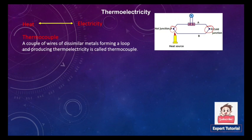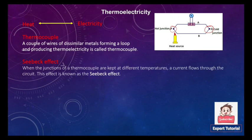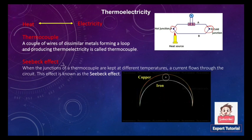Now coming to the first important thermoelectric phenomenon: the Seebeck effect. Thomas Seebeck in 1821 invented this property, known as the Seebeck effect. When the junctions of a thermocouple are kept at different temperatures, a current flows through the circuit. This effect is known as the Seebeck effect.